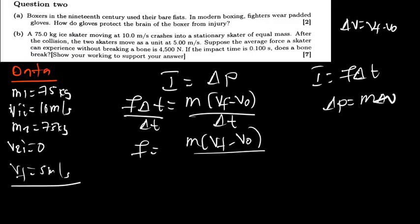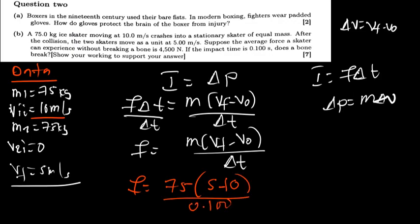So now from here, let's see, what is our final velocity? So the force will be equal to the mass is 75, the final velocity is 5, the initial is 10. The time is 0.100 seconds. So what is the force?